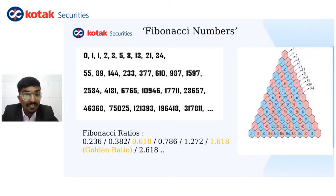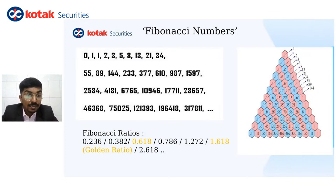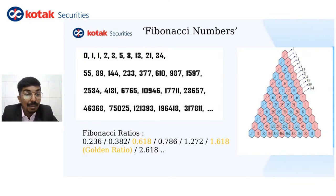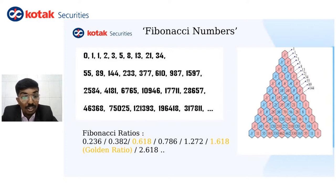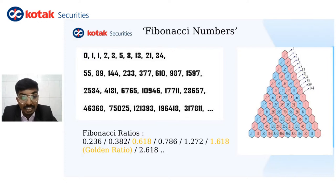Fibonacci Numbers is not just restricted to markets or mathematics — it is actually a worldwide presence. It's not just the numbers, it is also the ratios. If you divide 8 by 5, you will get a golden ratio of 1.618. And if you do it inversely, that is 5 divided by 8, you will get 0.618.